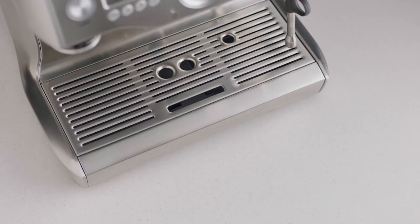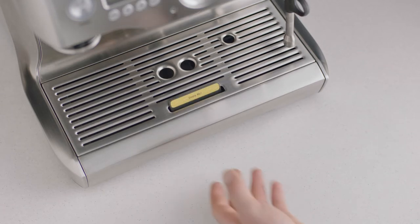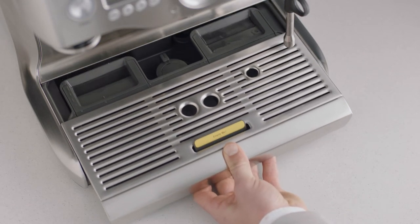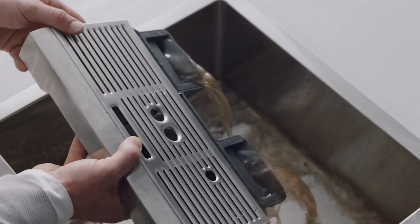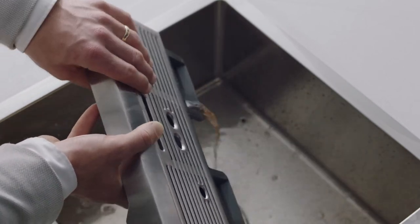The drip tray should be removed, emptied, and cleaned periodically with warm water, particularly when the empty me indicator shows. You should expect to see a considerable amount of water and espresso residue that has been collected over time.